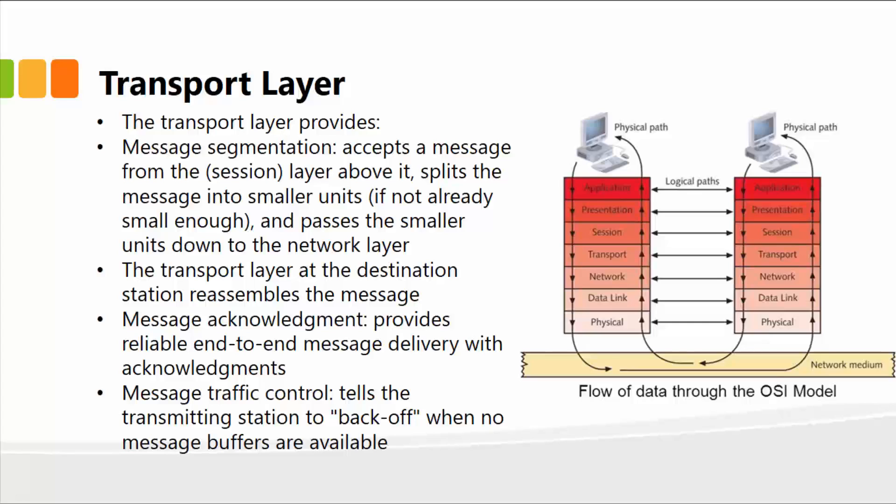The message traffic control is one of the other functions. It tells the transmission station to back off or stop when no message buffers are available.